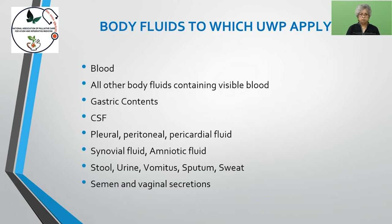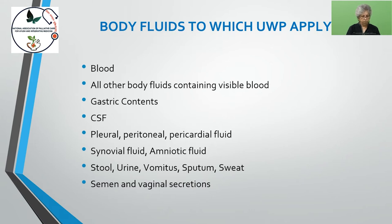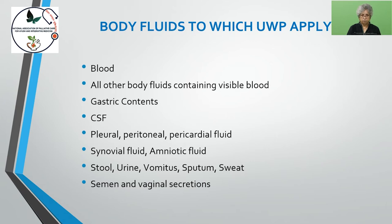Body fluids to which universal precautions apply are: blood, all other body fluids containing visible blood, gastric content, CSF (cerebrospinal fluid), pleural, peritoneal or pericardial fluid, synovial fluid, amniotic fluid, stool, urine, vomitus, sputum, sweat, semen, and vaginal secretions. These are all secretions, body fluids, and blood which require universal precaution.